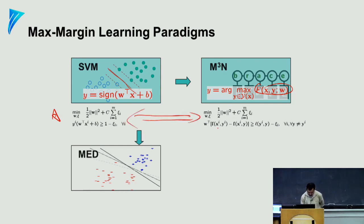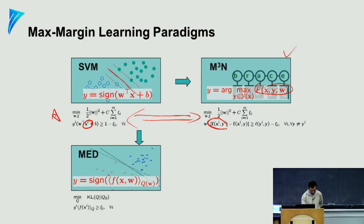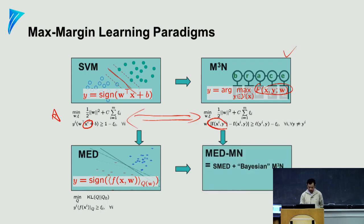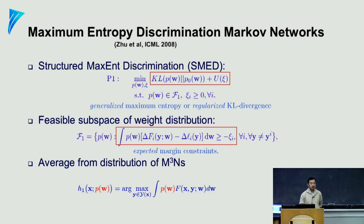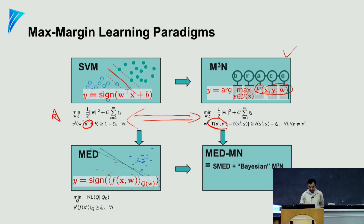Here you have a distribution of W, and naturally the next thing is to have a distribution of the structured SVM as well, just as we have a distribution of the SVM. This model is known as the maximum entropy discrimination Markov network. This model was invented about ten years ago in my group. At that time we didn't actually know the whole rationale that could lead us even further, which is now known as regularized Bayesian inference. But the idea was already pointing in that direction.